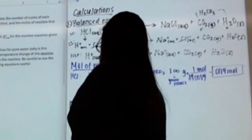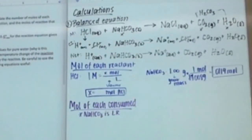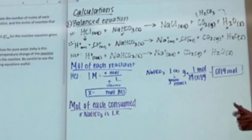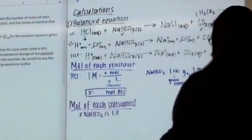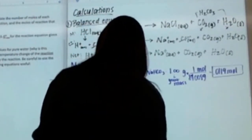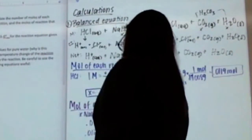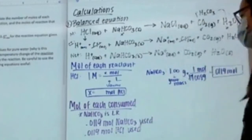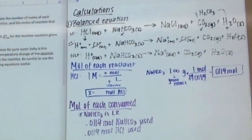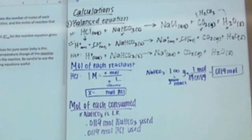Sodium bicarbonate is the limiting reactant. That means all of the sodium bicarbonate gets used up completely. Because it's one-to-one, the same amount of HCl gets used up. So 0.0119 moles of baking soda is used, and because it's a one-to-one ratio, you use that same number of moles of HCl as well. There are the moles of each reactant consumed.